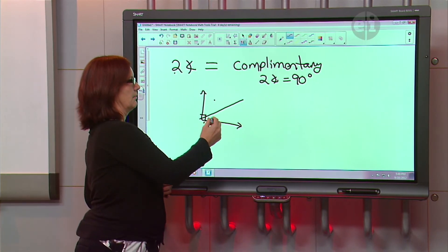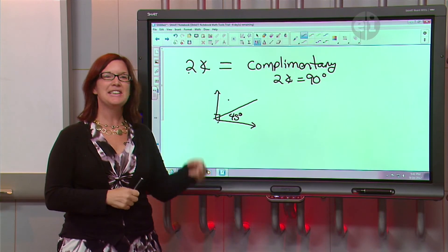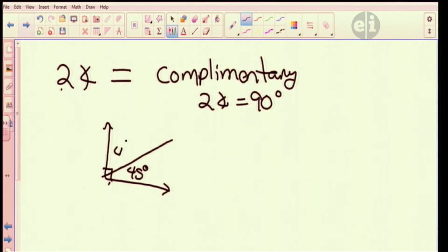What's half of 90? Ah, you're right. What is half of 90? It's 45 degrees. So each angle would be 45 degrees. So let's see if that's true. Can two angles be the same and be complementary at the same time?